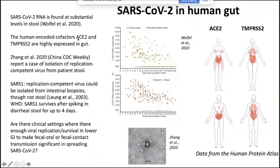The human cell factors needed for virus entry — ACE2, the receptor, and TMPRSS2, the protease — are expressed at very high levels in the gut. Looking at the Human Protein Atlas, the gut is actually one of the main sites of expression of these cofactors for SARS-CoV-2.